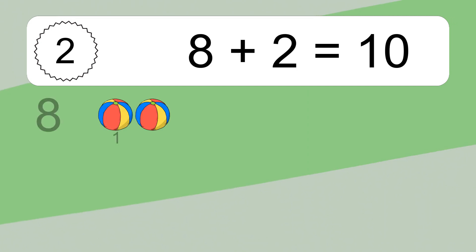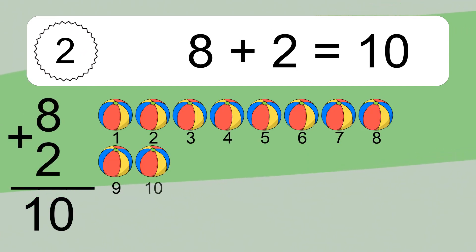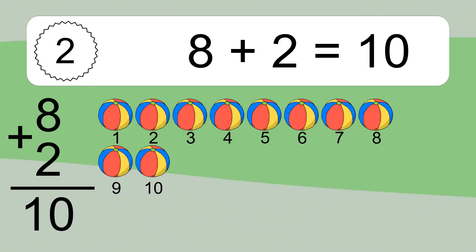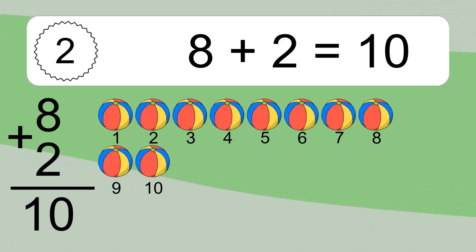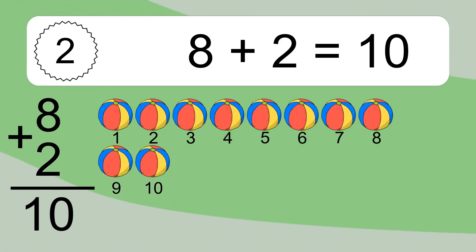8 plus 2 equals what? 8 plus 2 equals 10. Let's count it: 1, 2, 3, 4, 5, 6, 7, 8, 9, 10.